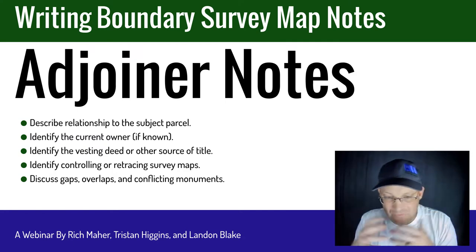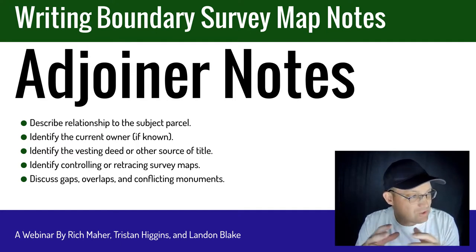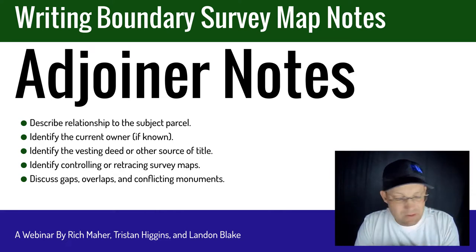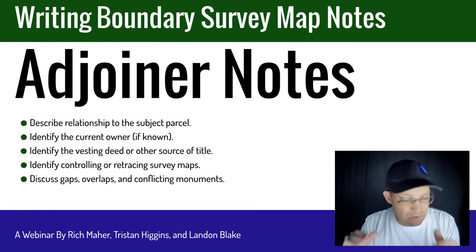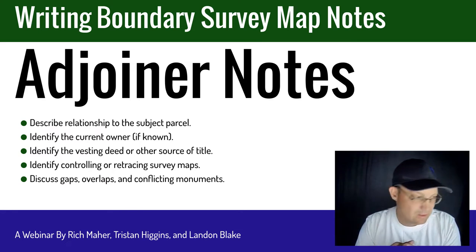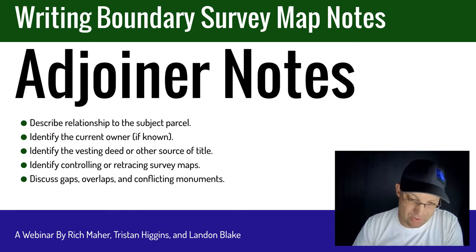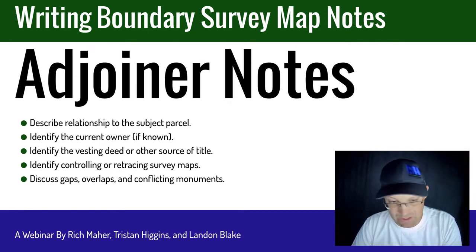What's the formula or guideline we follow for our adjoiner notes? We've got five elements. First, we describe the relationship of the adjoiner to the subject parcel. Then we identify the current owner of the adjoining parcel if we know it. We also identify the vesting deed or other source of title for the adjoining parcel. We identify any controlling or retracing survey maps that cover the adjoining parcel. And then we discuss if there are gaps, overlaps, or conflicting monuments between the subject parcel and the particular adjoining parcel. We have a separate note for each adjoining parcel.